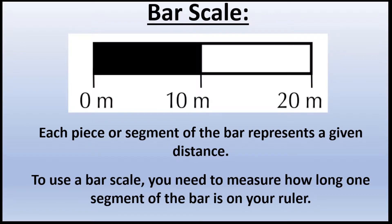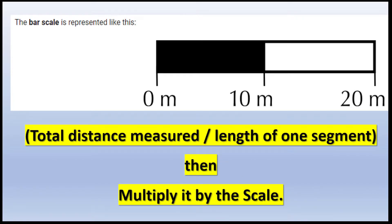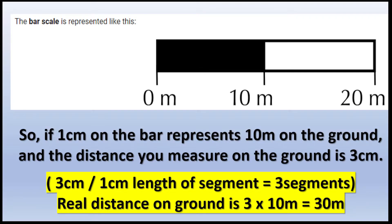Then we have our bar scale. With the bar scale, it's completely different to our ratio. Here we have segments, and each segment of the bar represents a given distance. The first segment represents 10 meters, and the next section another 10 meters. To use a bar scale, you measure how long one segment is on your ruler, then measure the distance on the map in centimeters, and calculate how many segments that works out to be — dividing the total distance by the length of one segment. Then multiply by the scale.